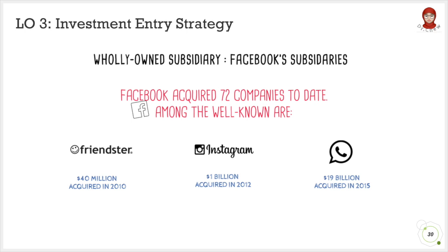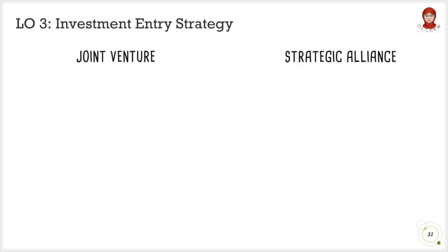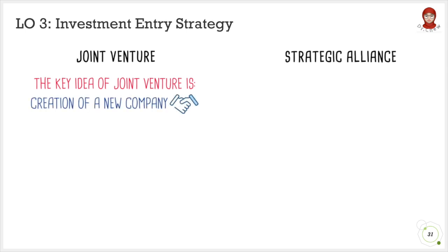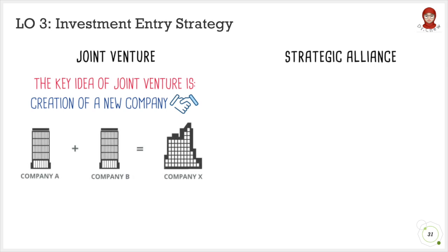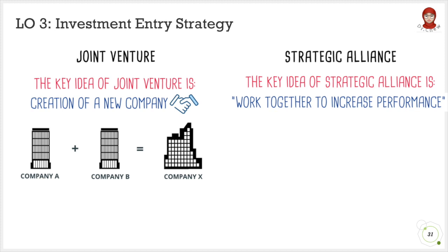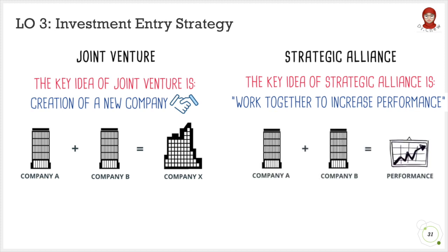For joint venture and strategic alliance, both involve cooperation between two or more companies but have different goals. The key idea of a joint venture is to create a new and separate company. Whereas for a strategic alliance, no new or separate company is created, but companies work together to increase their performance and achieve mutual benefits.